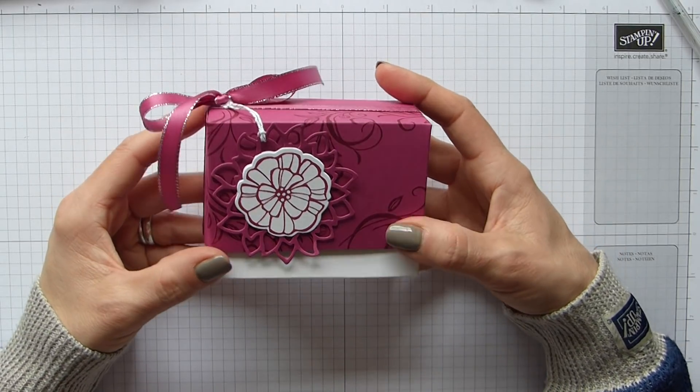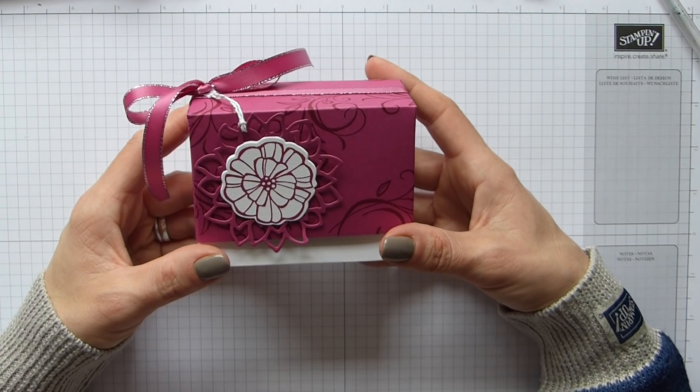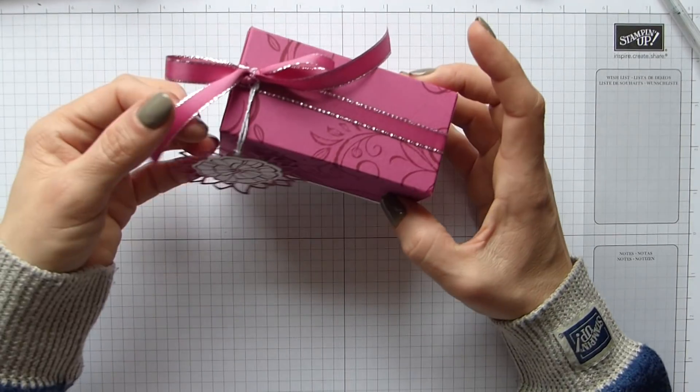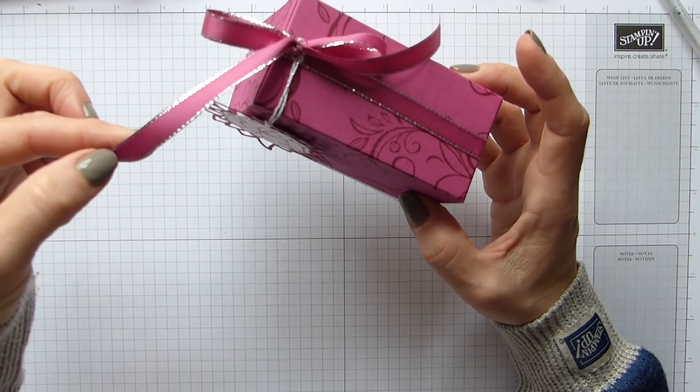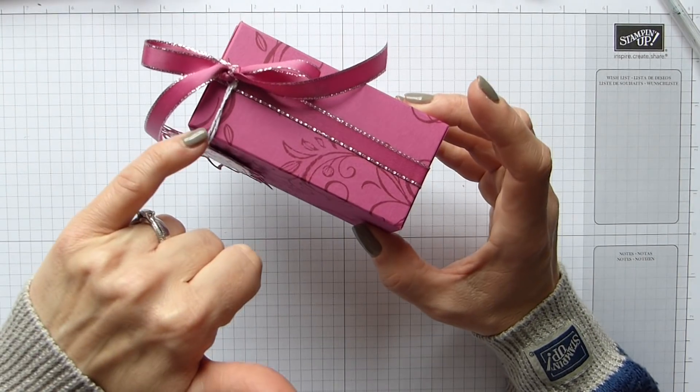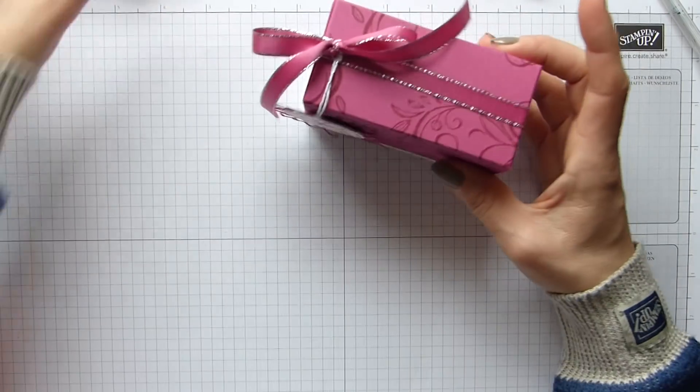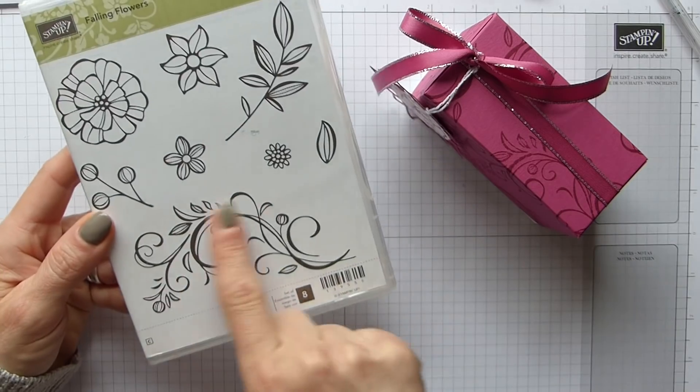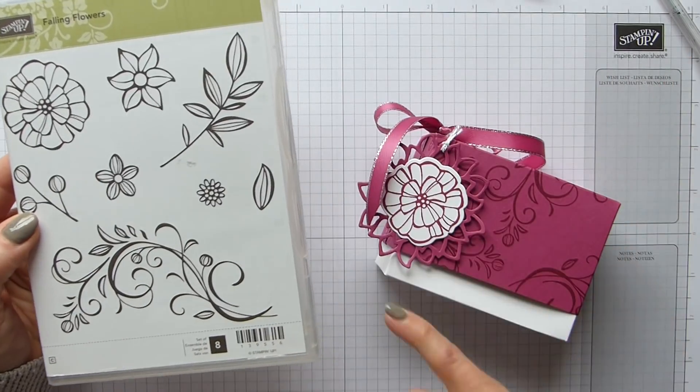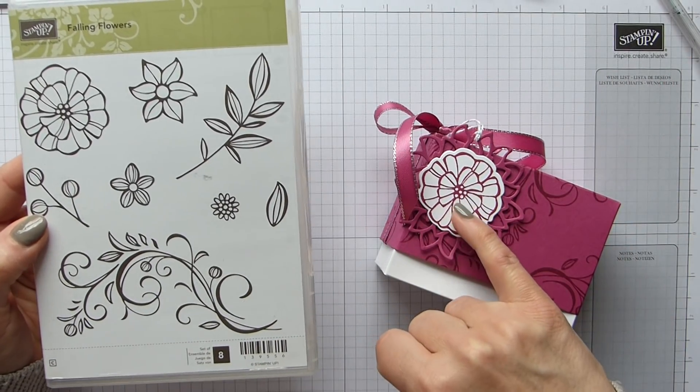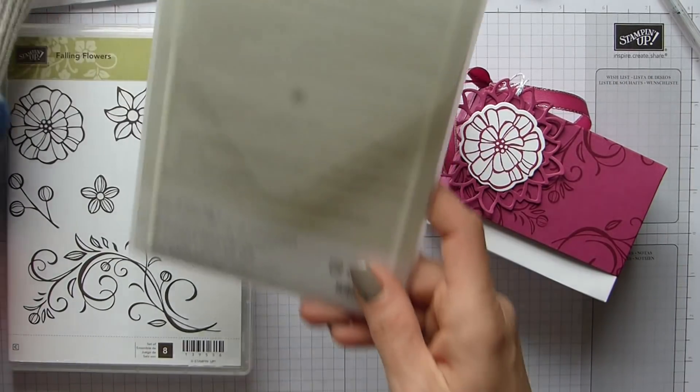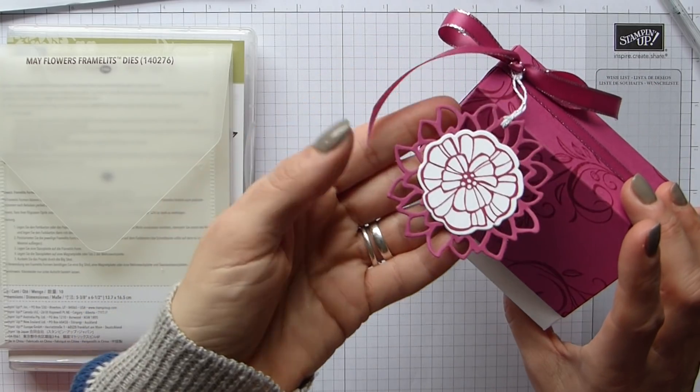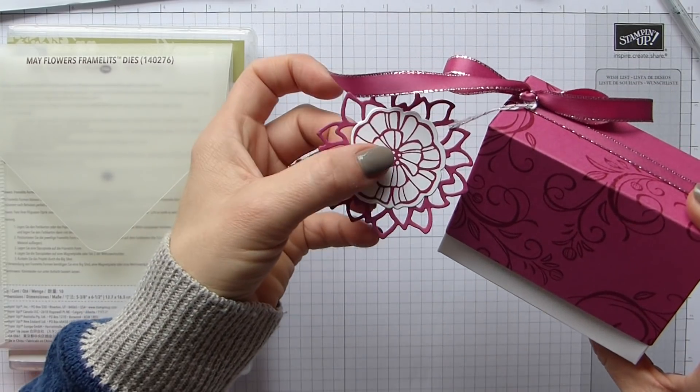If you like these products you need to get them before they all go. I've used the beautiful berry burst metallic edged ribbon, silver baker's twine, and Falling Flowers is the stamp set that I've used to stamp the big floral design on the top and then this flower on the tag. Then I've used the coordinating framelits Mayflower framelits to cut the beautiful large flower out and then the white center.